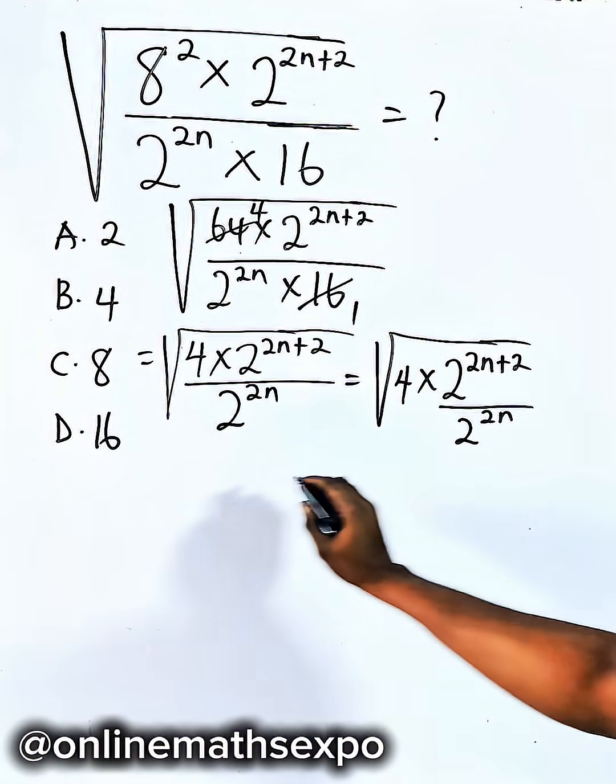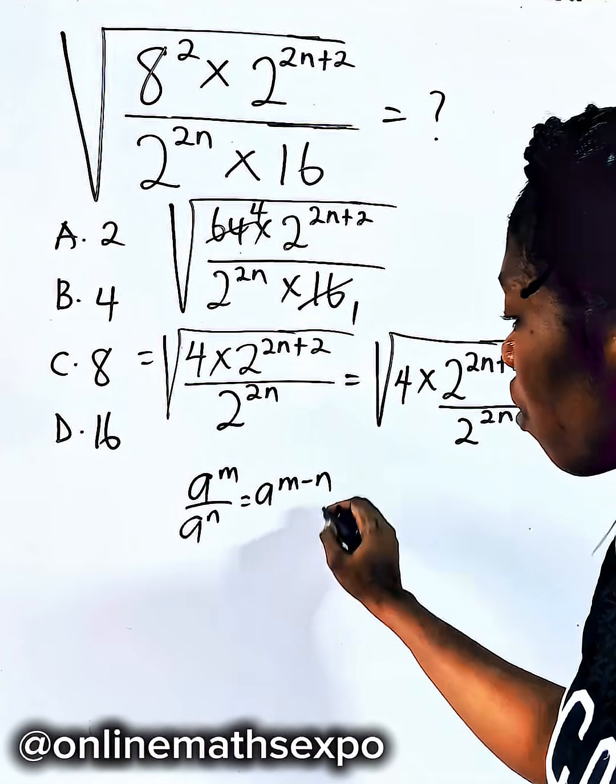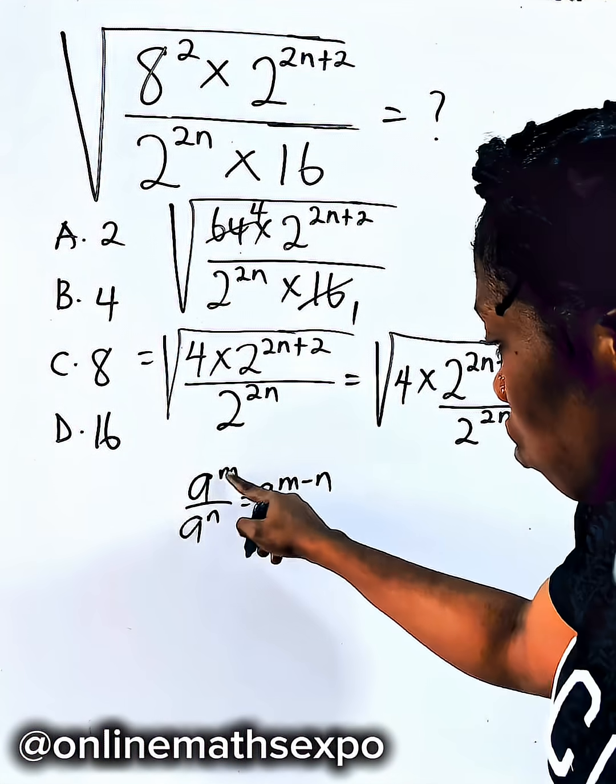So remember, for every 8 to the power of n divided by this, it is 8 to the power of n minus n. The powers will always subtract.